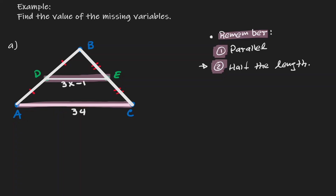Because if the midpoint segment is half the length, then we can write down an equation for it. We know that DE should be half of AC. We have expressions for that — DE has the expression 3x minus 1, and AC has the expression 34. This becomes a very simple equation, which we can solve by distributing that one half.